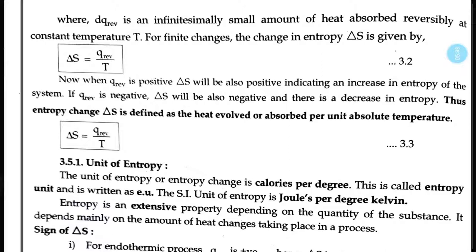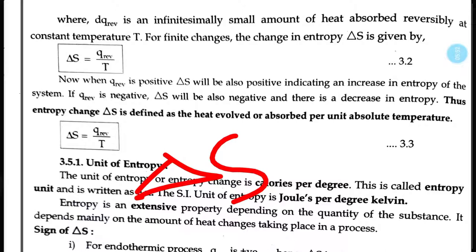The entropy change delta S is defined as the heat absorbed or evolved per unit absolute temperature.